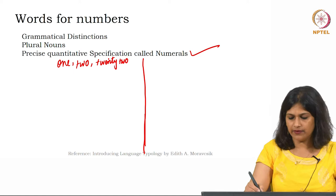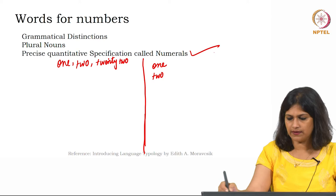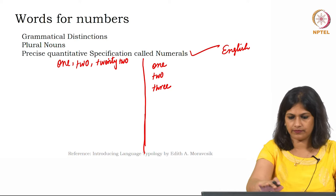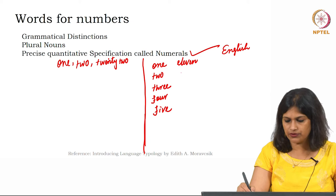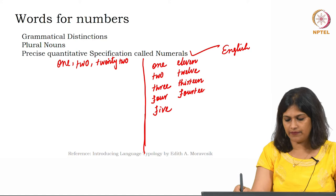I will give you examples from English first, and then we will see how we relate these to words from other languages. Let us take examples of 1, 2, 3, 4, and 5. From 1 we can have 11, from 2 we can have 12, from 3 we can have 13, from 4 we can have 14, and from 5 we can have 15.